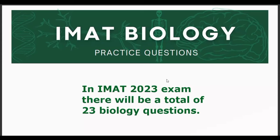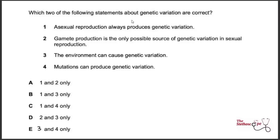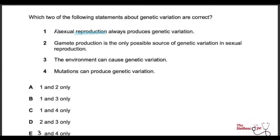These aren't past exam questions. Our first question asks which of the following statements about genetic variation are correct — we have four statements and must find the correct pair. Statement one is about asexual reproduction and whether it produces genetic variation. Asexual reproduction produces the least amount of genetic variation, so the idea that it always produces genetic variation is wrong — mark it incorrect.